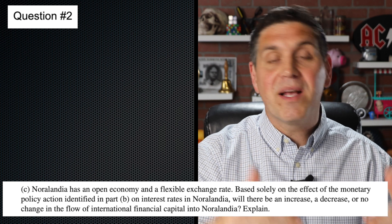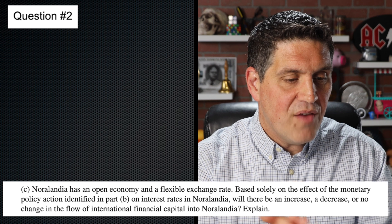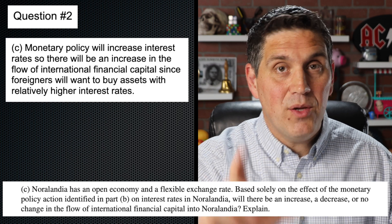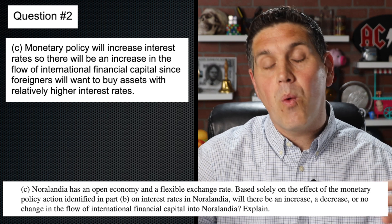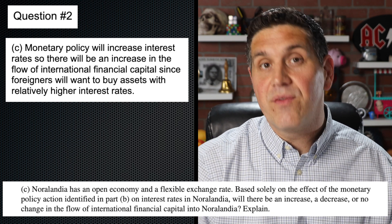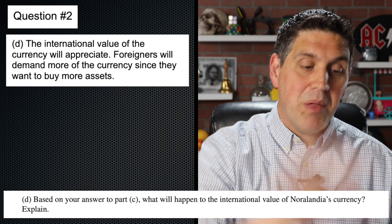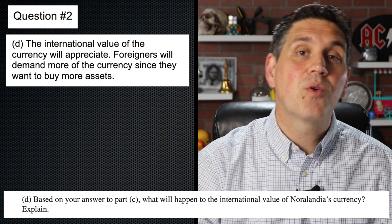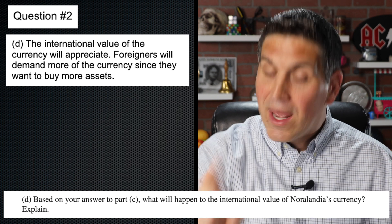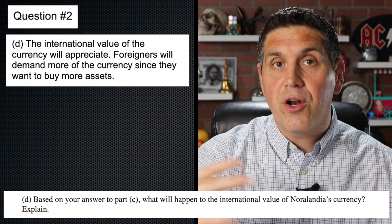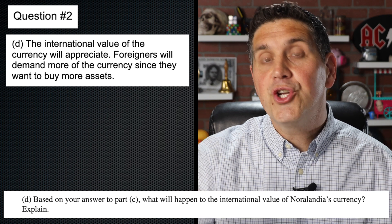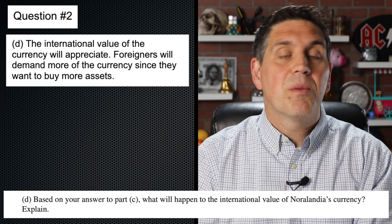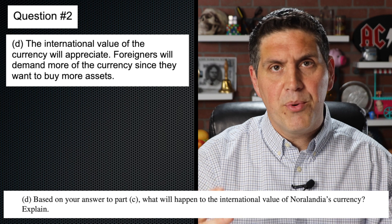Now in C, it says what happens because of the higher interest rates from B to the flow of international financial capital into the country? The answer is it's going to increase. You had to explain — if there's an increase in interest rates, then foreigners are going to want to buy more of the assets because they want that higher rate of return. And in D, you didn't have to draw the graph, but you had to explain what's going to happen to the value of the currency. If people want assets, they need the currency, so demand is going to increase causing the currency to appreciate. You could say either there's an increase in demand for the currency, or that people inside the country are going to buy other countries' assets so the supply is going to decrease — causing the currency to appreciate. Either way, you had to say appreciate and why.